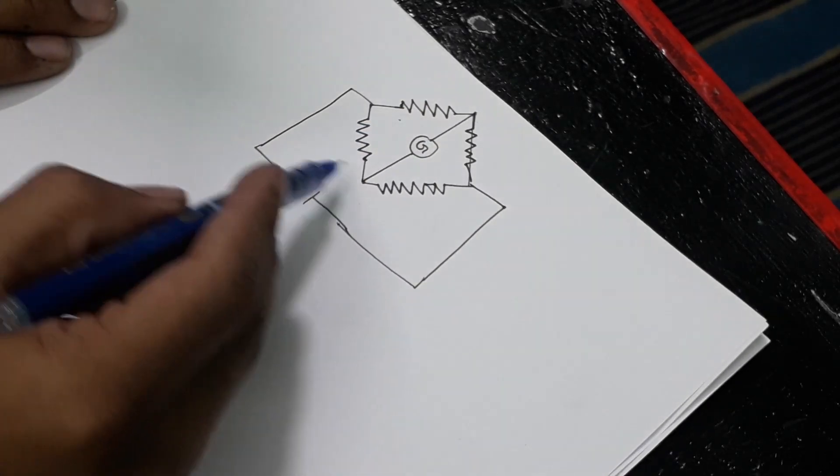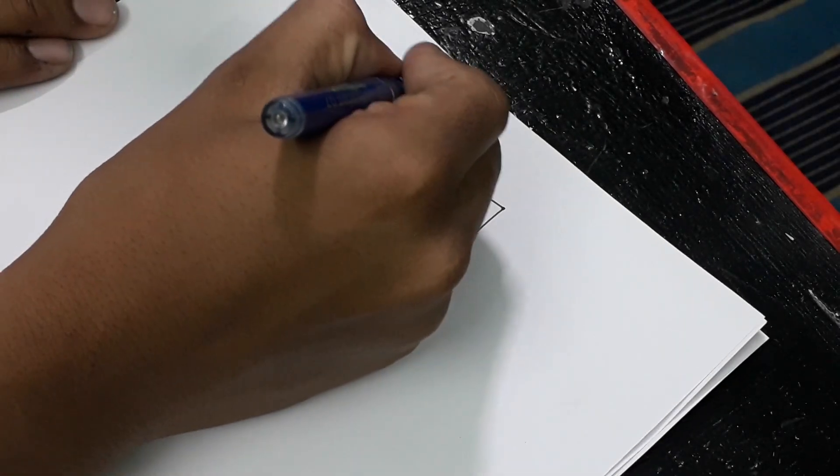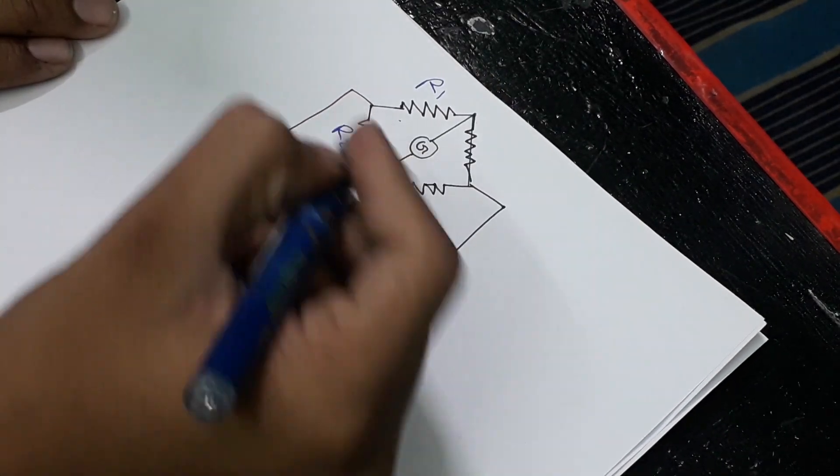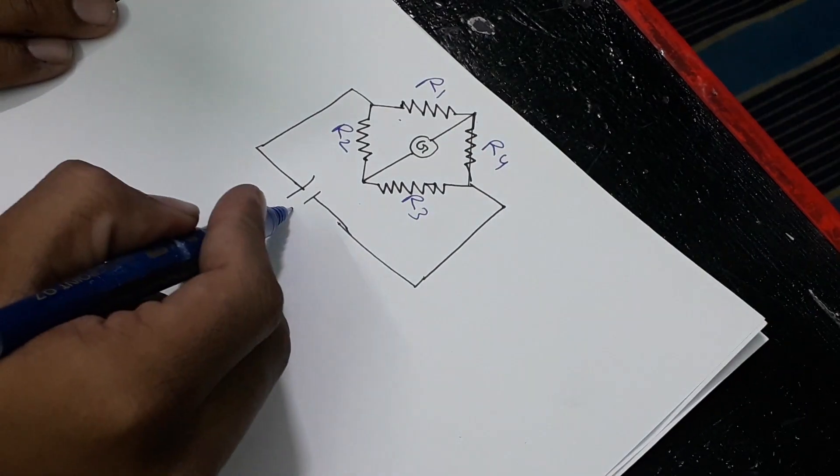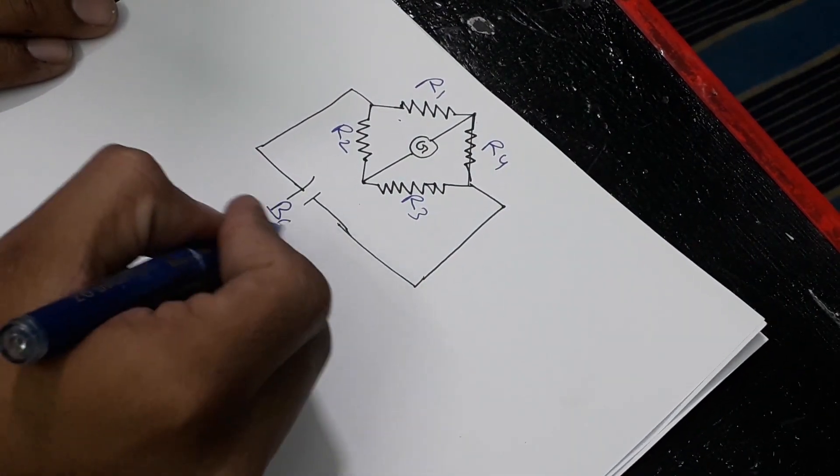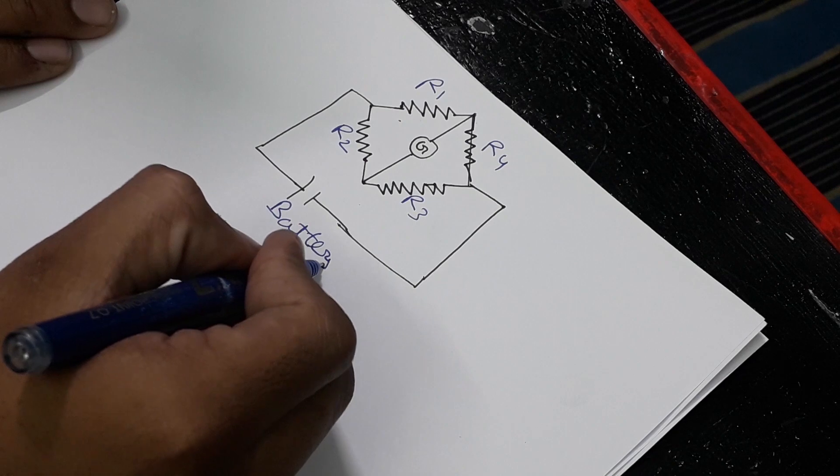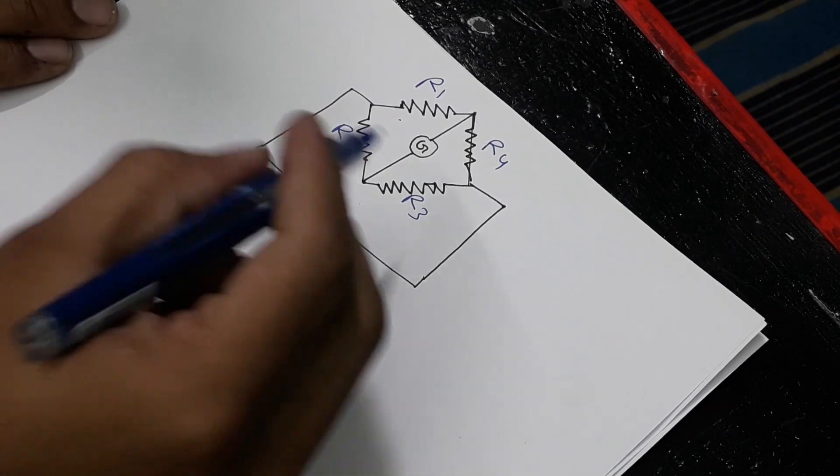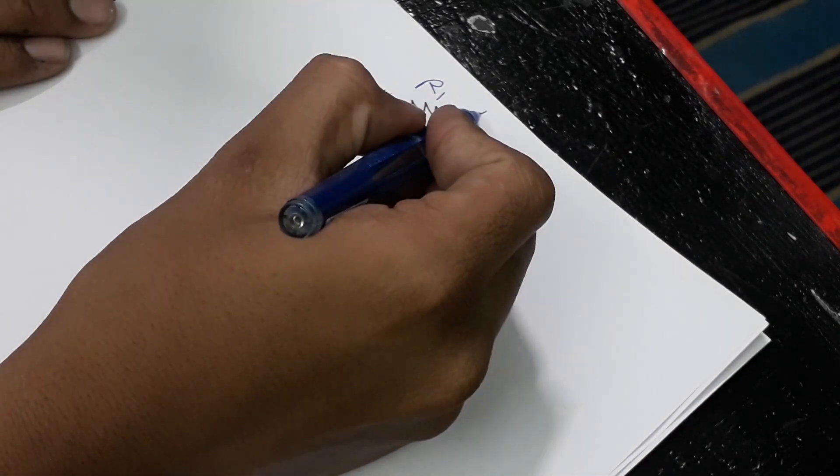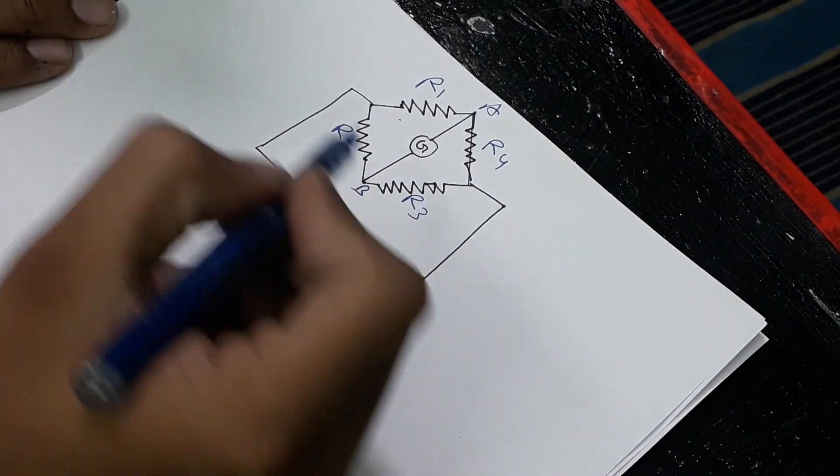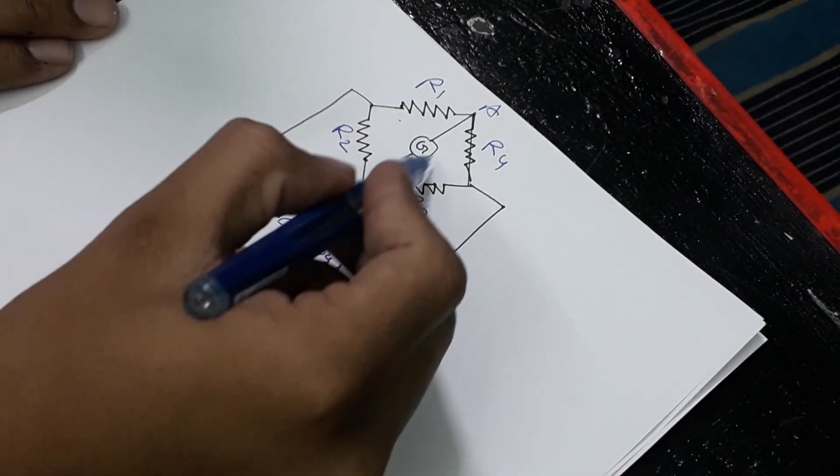It has 4 resistances, namely R1, R2, R3, and R4. A battery is connected, and a galvanometer is connected from point A to point B to measure the current on the galvanometer.